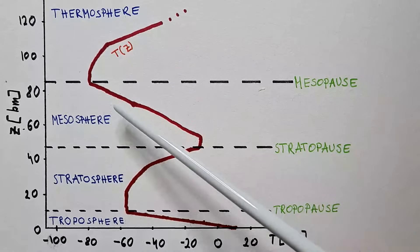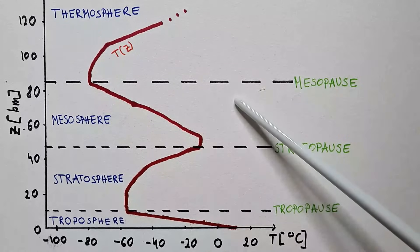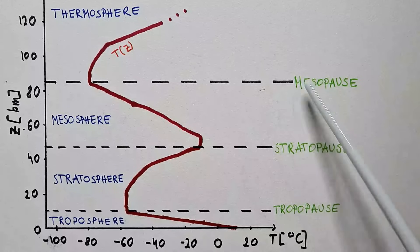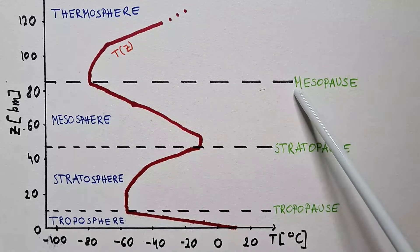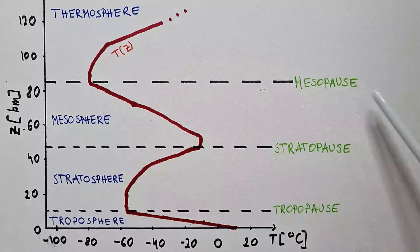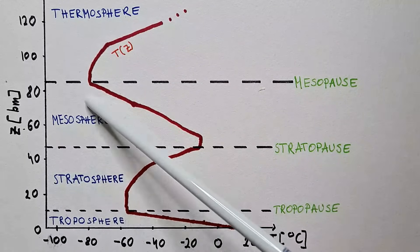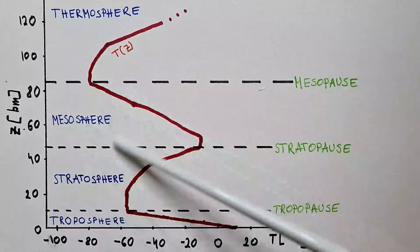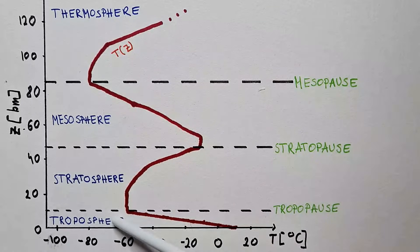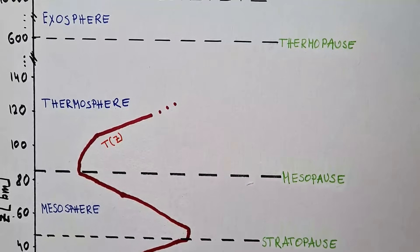Keep in mind that air density here is extremely low. To demonstrate that, 99.9% of the mass of our atmosphere is below the mesopause. Also, the stratosphere and mesosphere together are called the middle atmosphere, while the troposphere is the lower atmosphere.